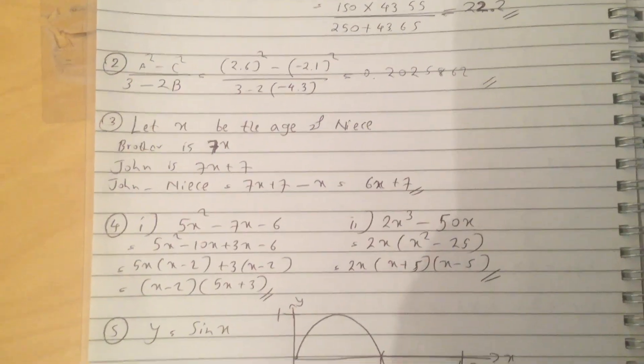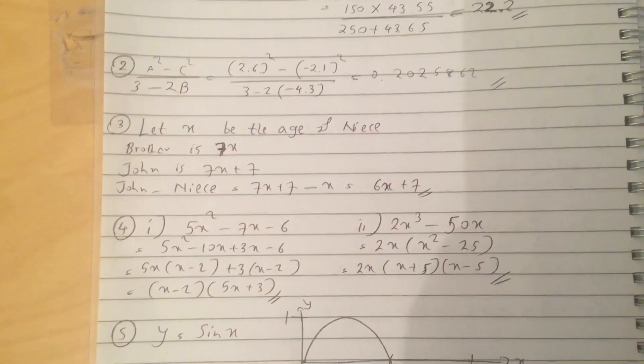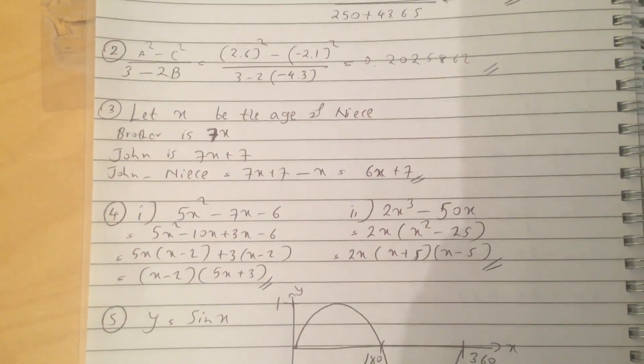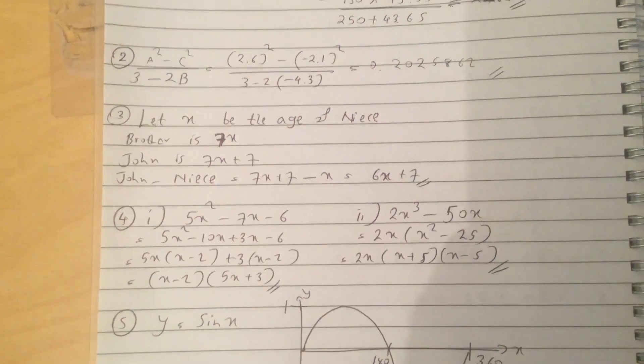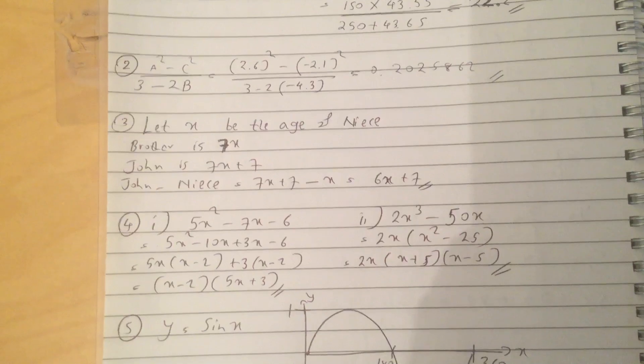For part 1 you factorize using quadratics, and part 2 you factorize 2X out first, and then difference of two squares to get 2X, X plus 5, X minus 5.